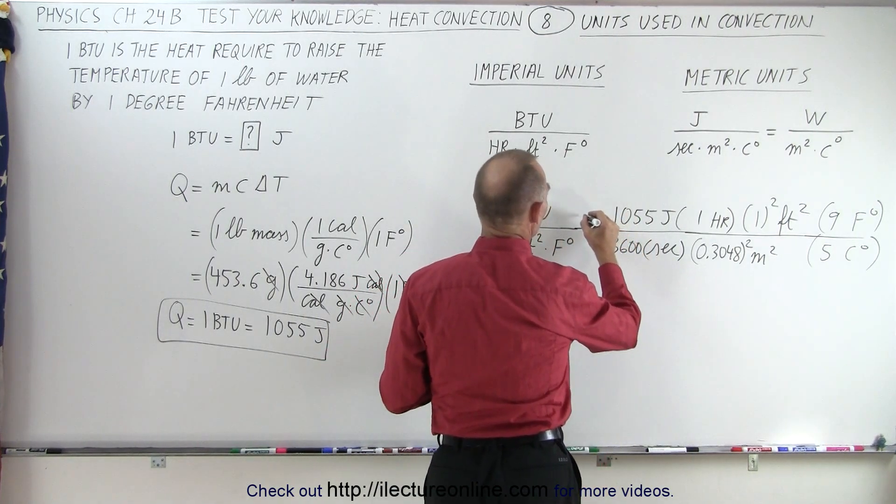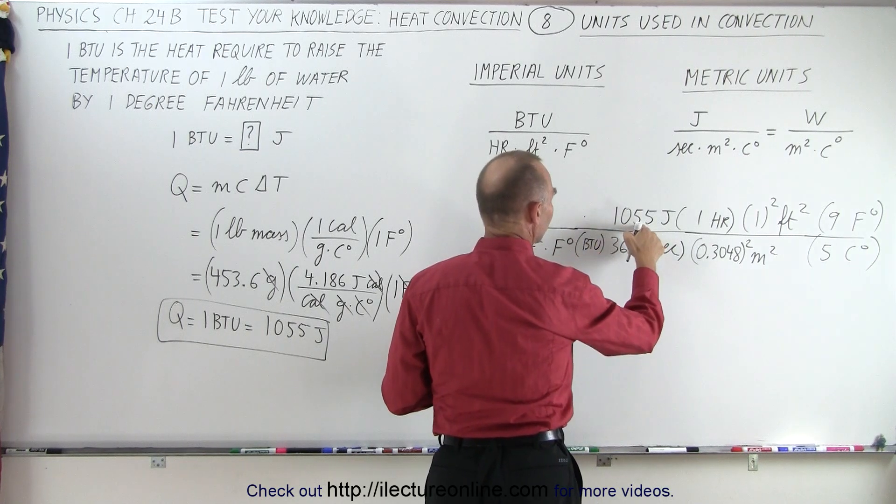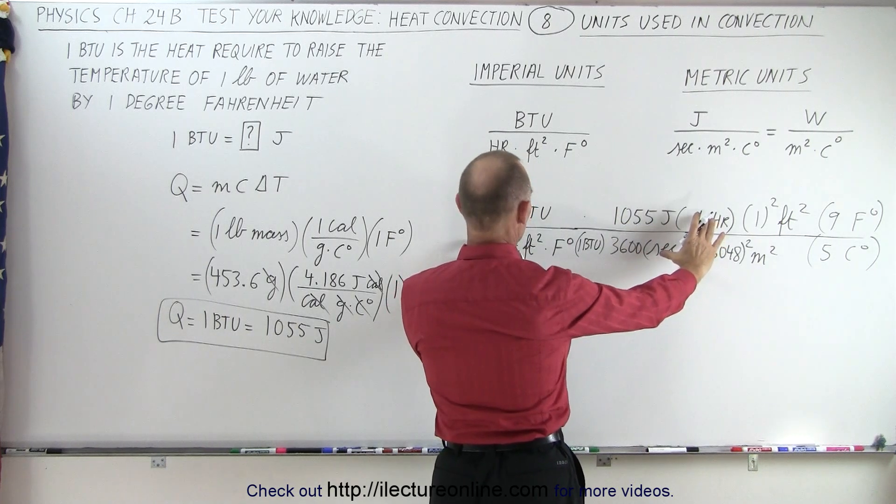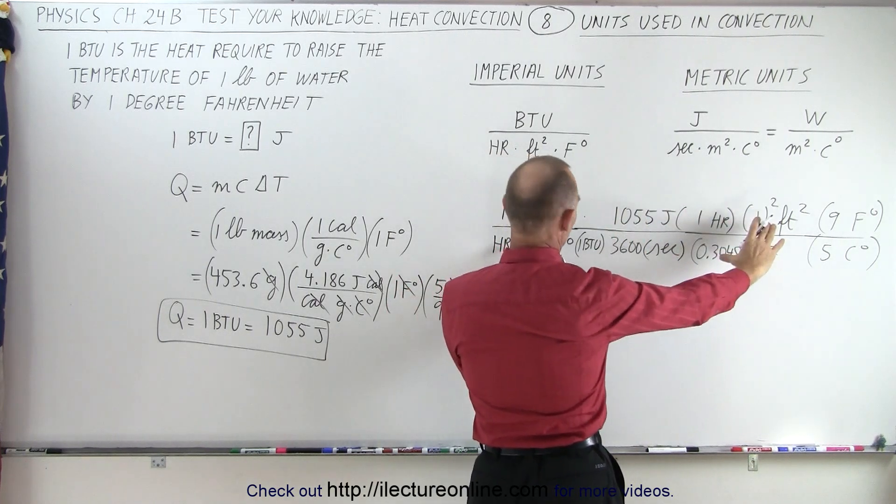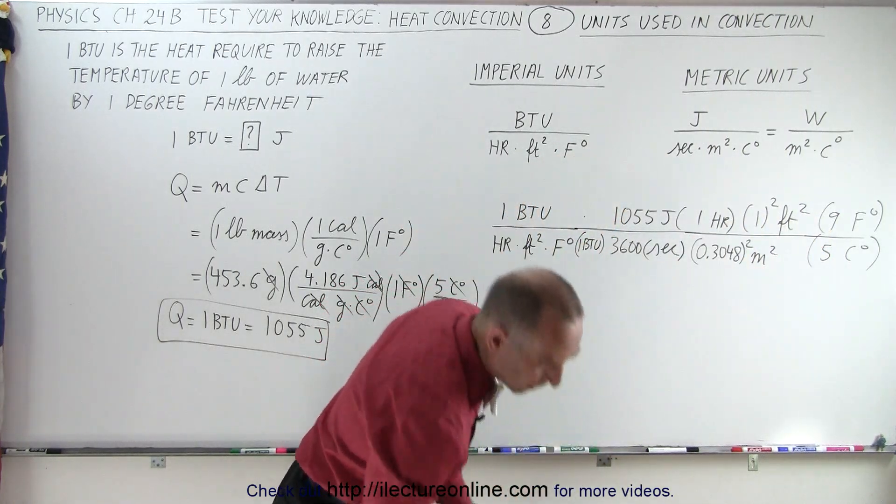What I'm going to do is multiply this, and I need a term of BTU in here. So 1055 joules is one BTU to have that conversion factor, a conversion factor for the hours, for the square feet, and for the Fahrenheit degrees. That's a more proper way to write it.